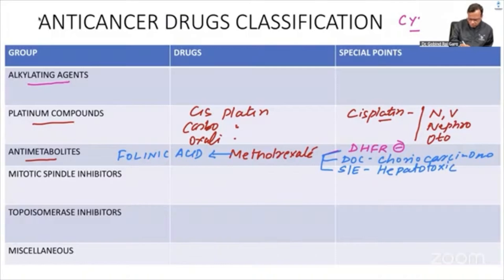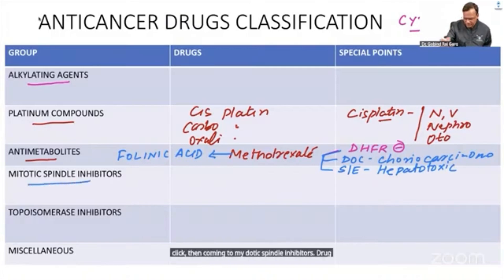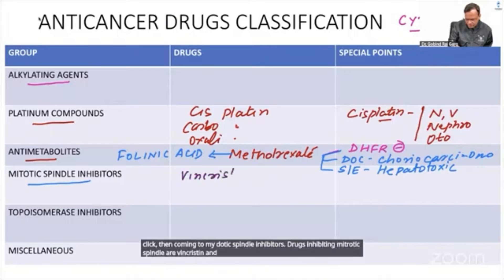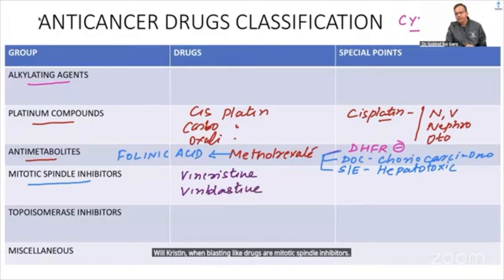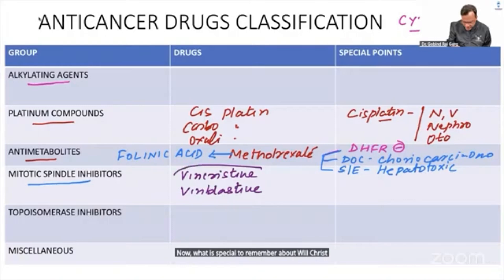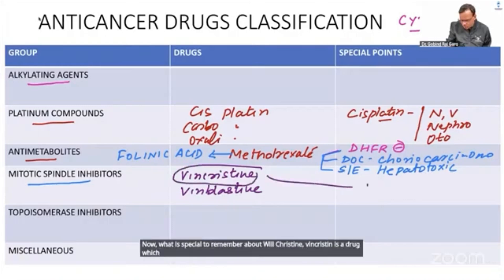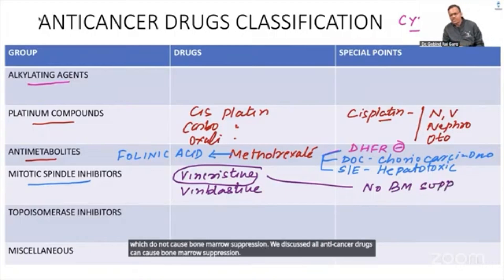Mitotic spindle inhibitors include Vincristine and Vinblastin. An important special point to remember is that Vincristine does not cause bone marrow suppression, unlike most other anti-cancer drugs.